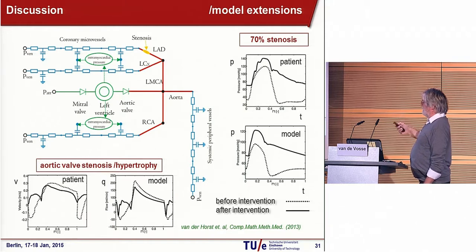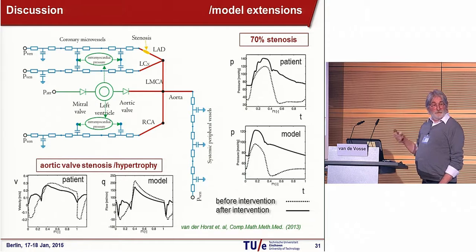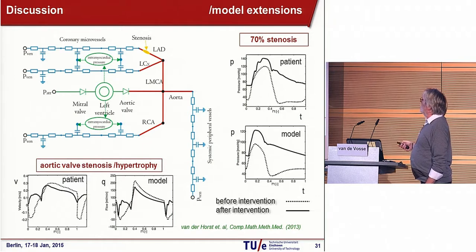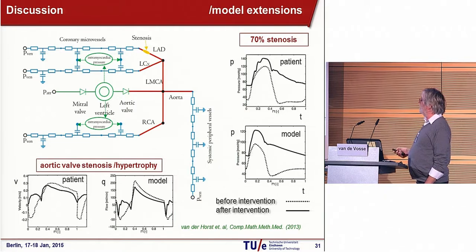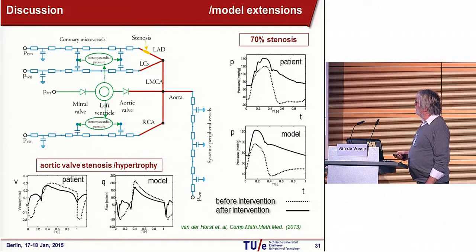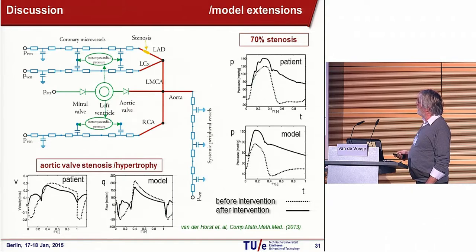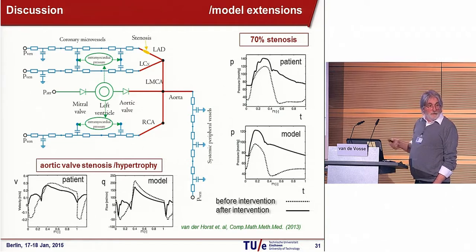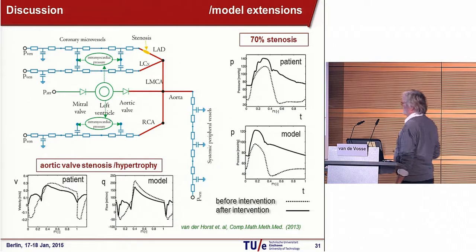Now, two slides on what could be interesting for this conference. We can also look at an aortic valve stenosis. You can see we have again the patient and the model — this is before intervention, where we have the velocity measured in the coronary artery with an aortic stenosis, and this is after the intervention, showing a quite normal pattern again. The model predicts more or less the same. So also there the model could predict what would be the possible outcome of intervention.